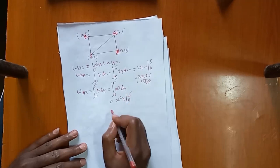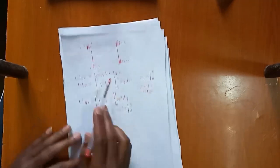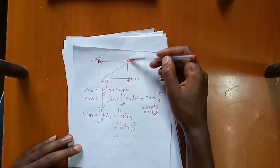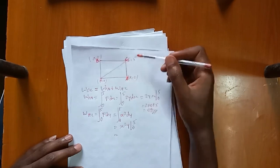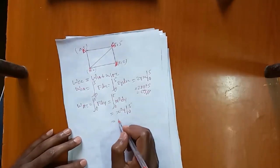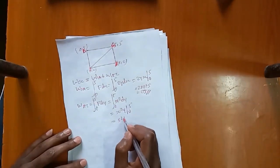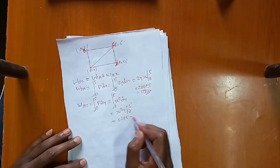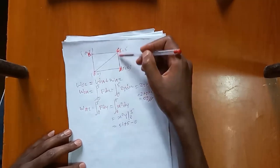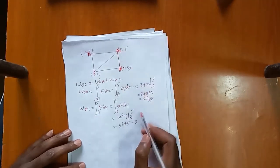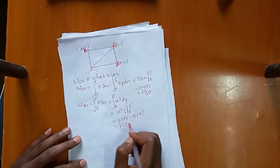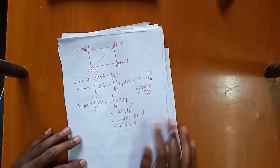Evaluating from 0 to 5: x²·y from 0 to 5. With x equals 5, that gives 5 squared times 5 minus 0, which equals 25 times 5 minus 0. Zero times 0 gives 0. The result is 25 times 5 equals 125. So the work along AC is 125 joules.